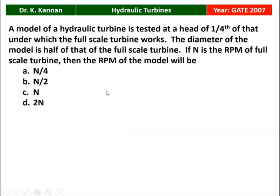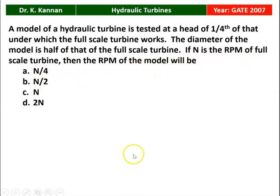The next question is from the GATE 2007 question paper. A model of a hydraulic turbine is tested at a head of one-fourth of the full scale turbine. The diameter of the model is half of the full scale turbine. If N is the RPM of the full scale turbine, then the RPM of the model will be — options are N/4, N/2, N, or 2N. Normally in model analysis, the speed of the prototype and the speed of the model will be the same; other parameters change with the scale ratio.